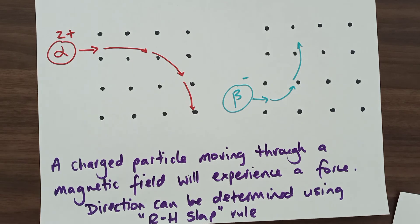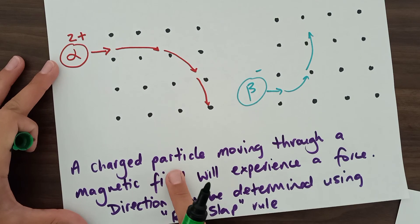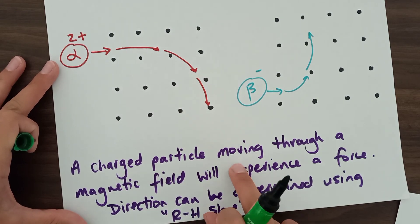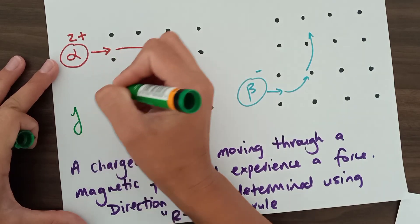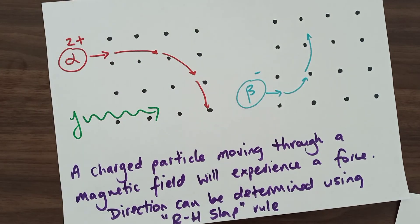One last thing. What about gamma rays? Well, they are not charged particles. Okay, so the charged particle has to be moving through the magnetic field. If you have a gamma ray, it will not be affected by magnetic field. So it will just go straight through. Hope that helps.